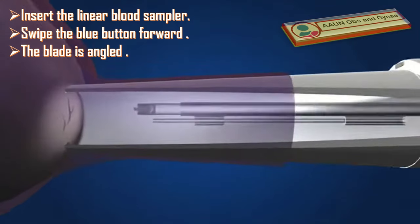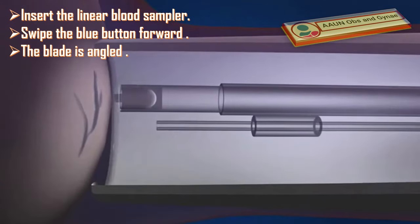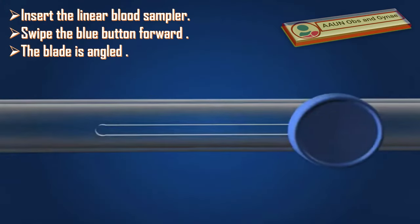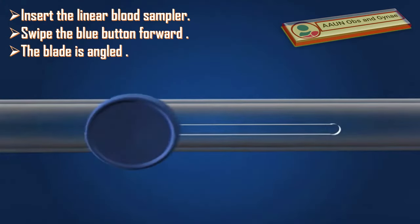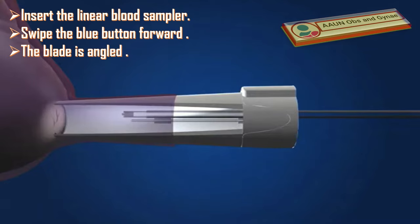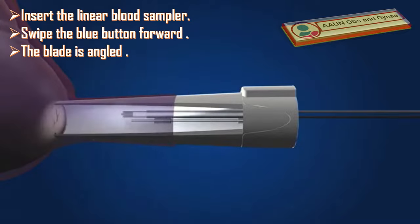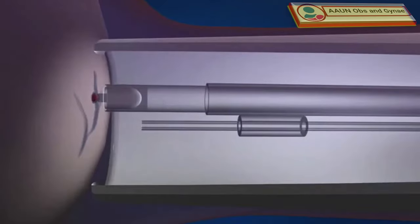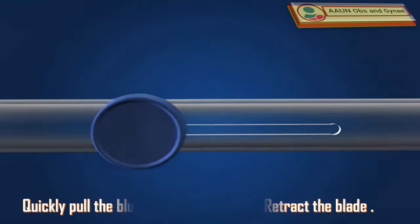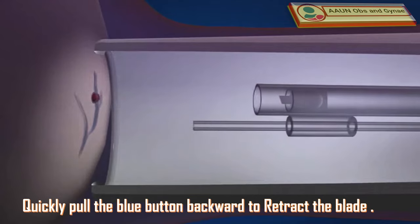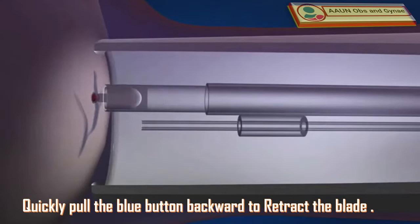The blade is angled, and that allows it to stab the vein more accurately. Once the vein is stabbed, quickly pull the blue button backward to retract the blade.